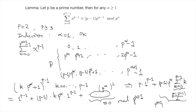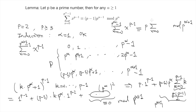Summing all the columns, we get the sum from 0 to p^(α+1) - 1 of x^(p-1) is congruent to p times the sum from 0 to p^α - 1 of x^(p-1), modulo p^(α+1). This reduces the problem from α+1 to α, and applying the induction hypothesis gives the result.